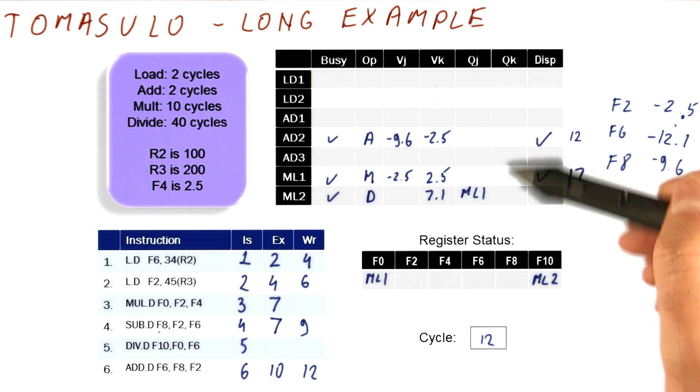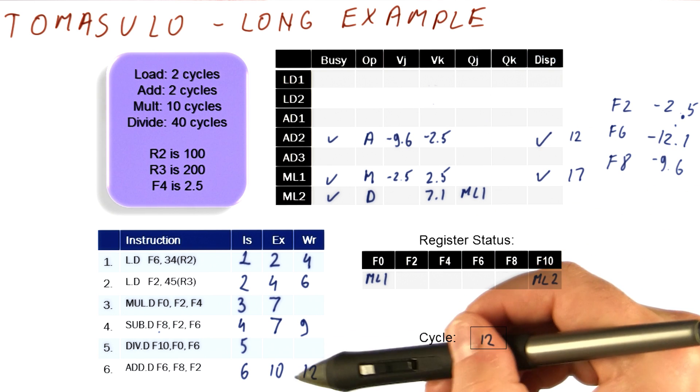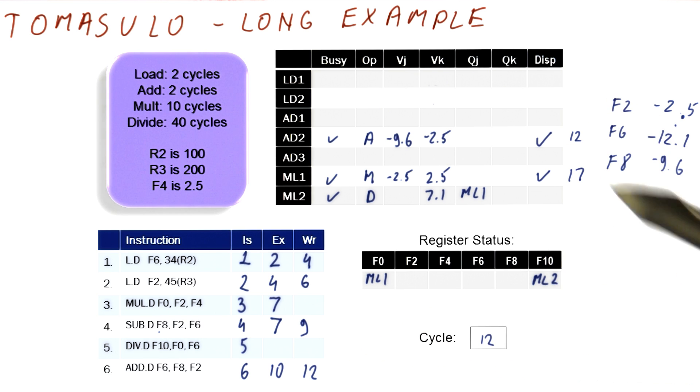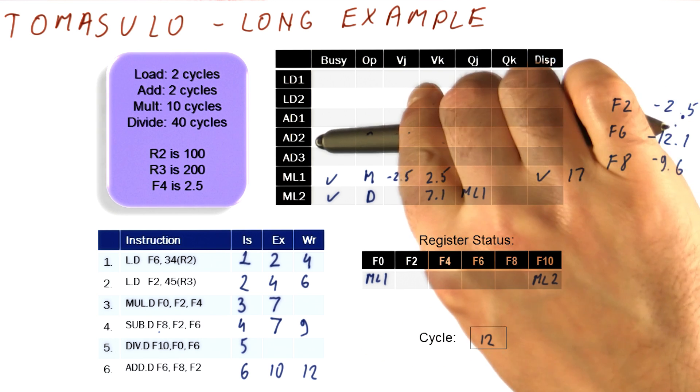And no instructions were waiting for, we know that this was the last instruction in our sequence, so nobody was really waiting for this result. But this instruction is done now. So we can free this reservation station.